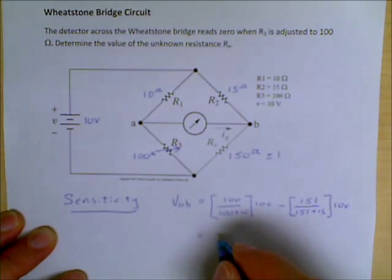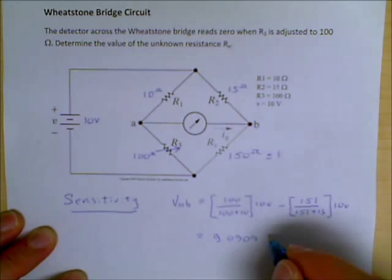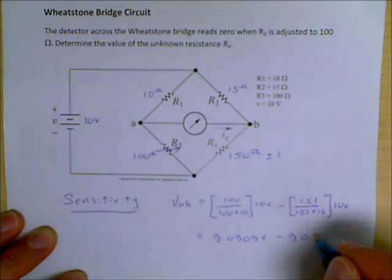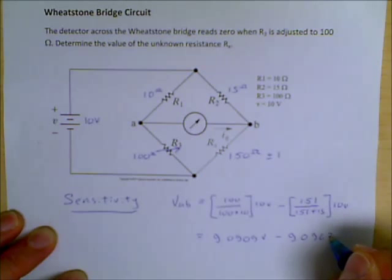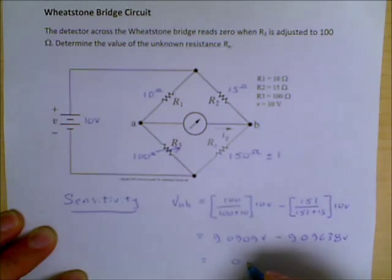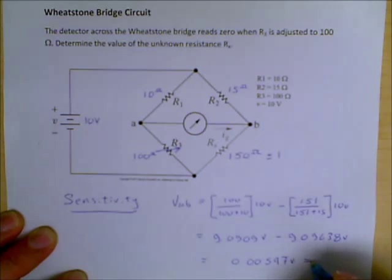We do the calculations on this. This comes out to be 9.0909 volts, minus 9.09638 volts. This has a difference of 0.00547 volts, or in other words, 5.5 millivolts.